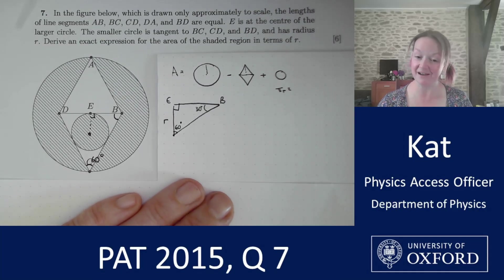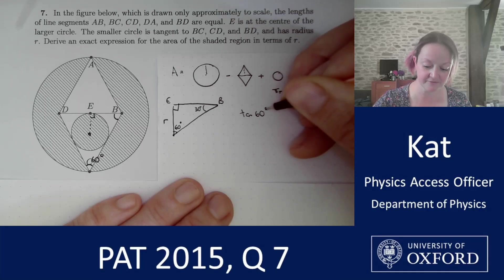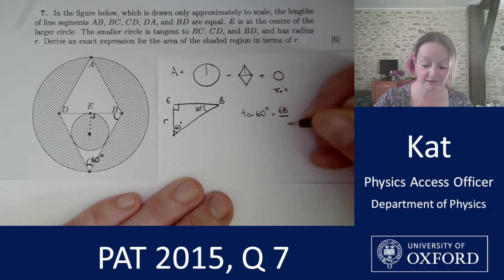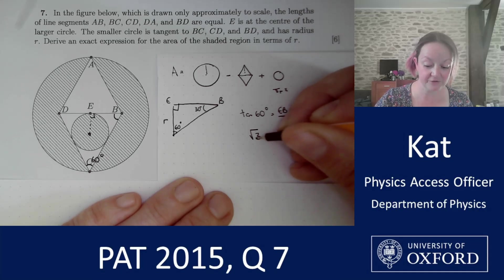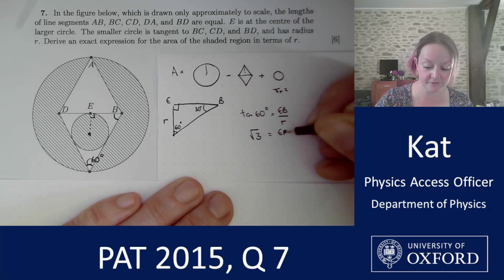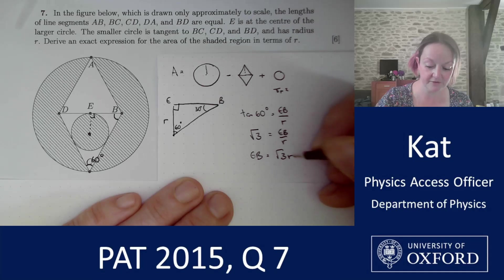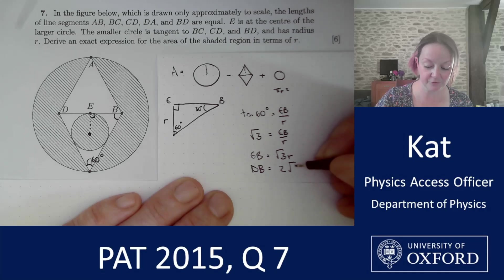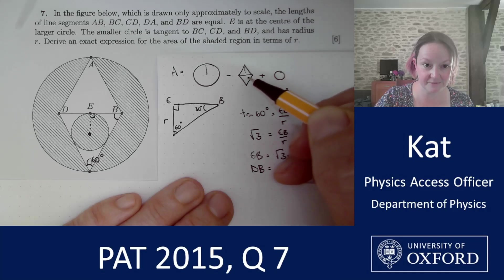That means, nice and simply, I can use tan. So I can say that tan of 60 degrees is my opposite side, or length EB, over my adjacent side, which in this case is R. Using the exact value of tan 60 as root 3, I've straight away got the fact that EB is equal to root 3R, and DB is twice root 3R. So I've already got one of the factors that I need to be able to calculate the area of this triangle and the diamond, and the next stage is going to be working at this perpendicular height.